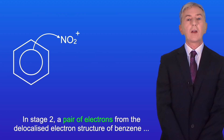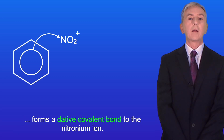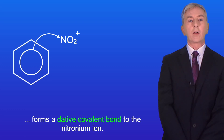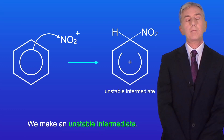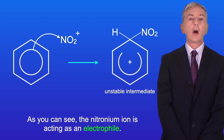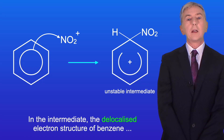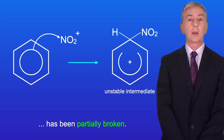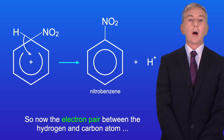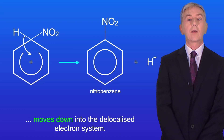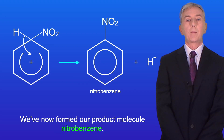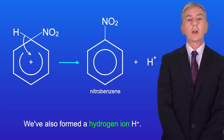In stage two, a pair of electrons from the delocalized electron structure of benzene forms a dative covalent bond to the nitronium ion, making an unstable intermediate. The nitronium ion is acting as an electrophile. In the intermediate, the delocalized electron structure of benzene has been partially broken. The electron pair between the hydrogen and carbon atom then moves down into the delocalized electron system, forming the product nitrobenzene and a hydrogen ion H+.